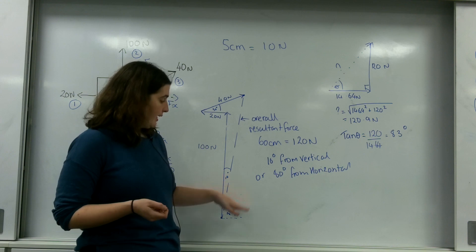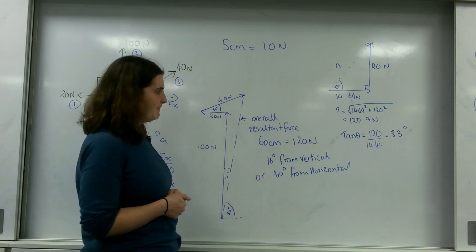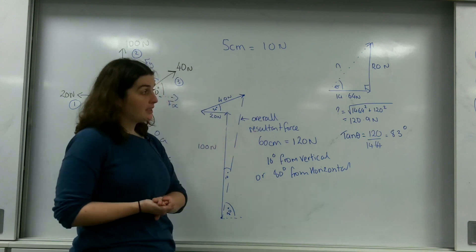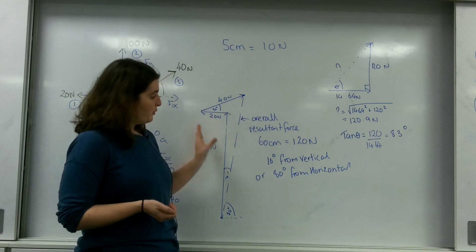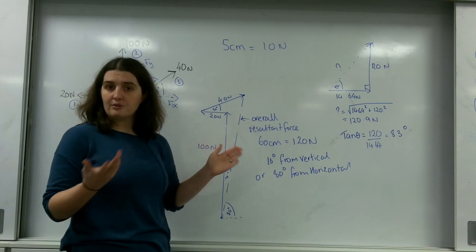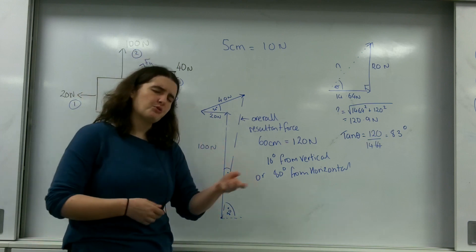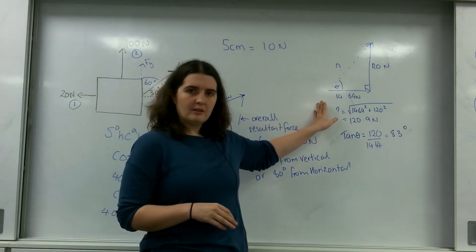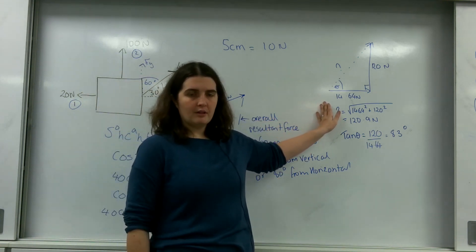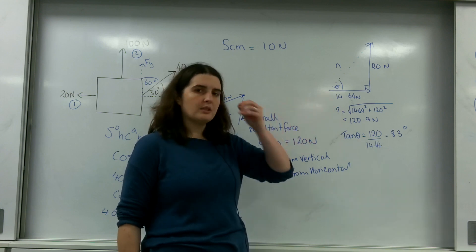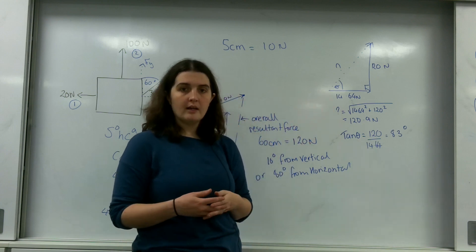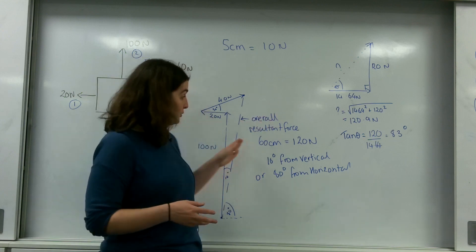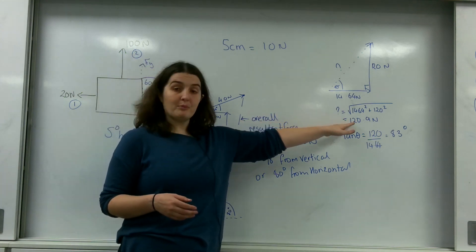That's not bad at all — it shows the validity of both methods. The scale diagram does have a degree of error depending on how well you drew it and whether the angles were right. The component method is the more accurate approach since it only uses numbers with no drawing error involved. However, both give valid, comparable results.